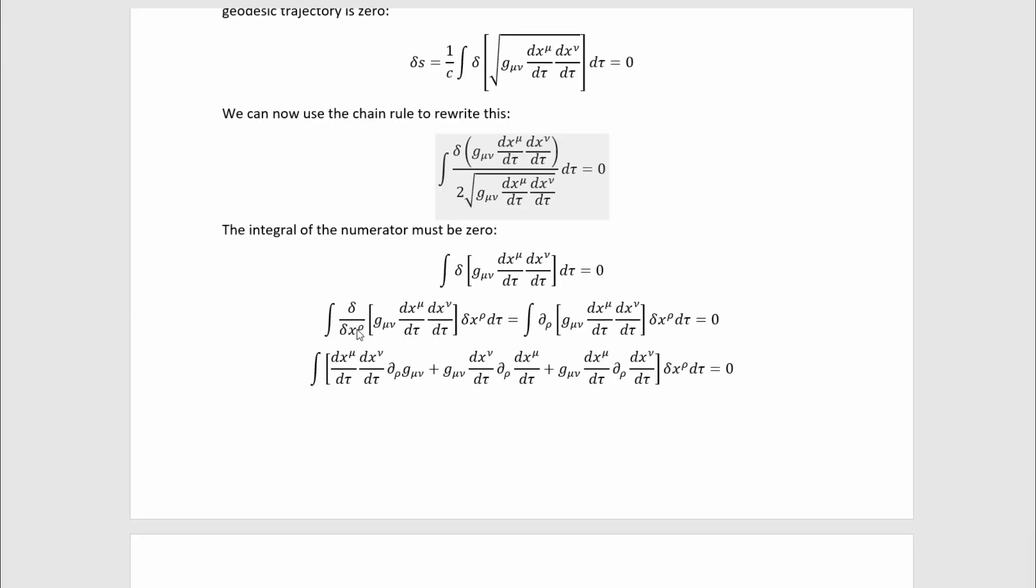The first thing after that that I did is I multiplied and divided by delta x rho. And the reason why I did that was to get this partial derivative in here and extract out this variation to the side. Now, the reason why this is allowed is actually slightly subtler. At first, it just looks like I'm multiplying and dividing by the same thing. But notice how these indices are contracted. If we expanded out that sum, in each term, the differential here and here would cancel.